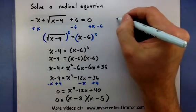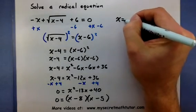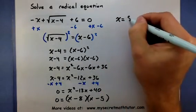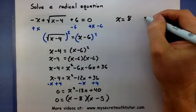So it looks like we have two possible solutions. x could equal 8 or x could equal 5.